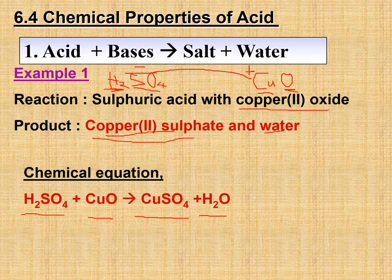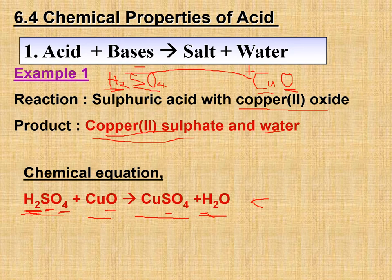Now check whether the equation is balanced. Hydrogen: we have 2 on the left and 2 on the right. Sulfur: 1 on each side. Oxygen: 4 + 1 = 5 on the left, and 4 + 1 = 5 on the right. Copper: 1 on each side. All elements are balanced between the left and right sides of the arrow.